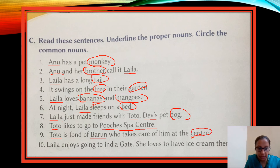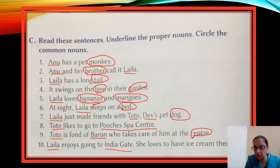Last sentence: 'Laila enjoys going to India Gate.' Laila — proper noun. India Gate — a particular place — proper noun. 'She loves to have ice cream there.' Ice cream — which ice cream? Not clear — common noun.